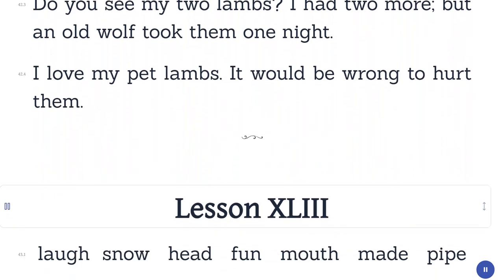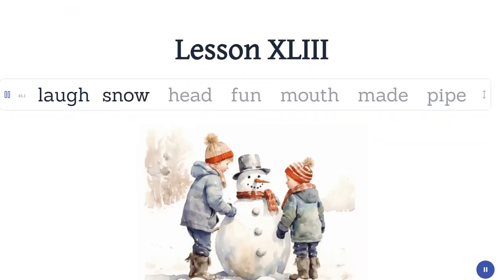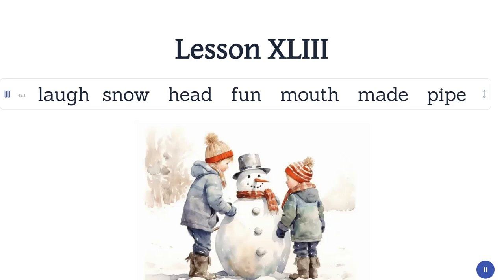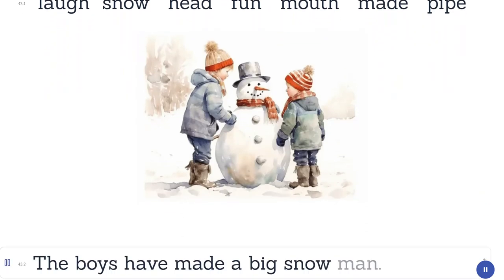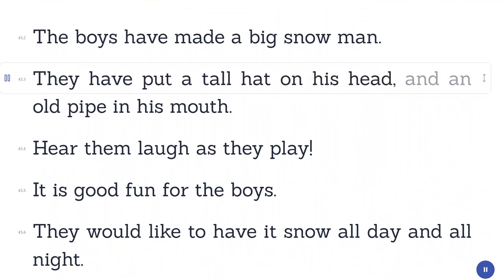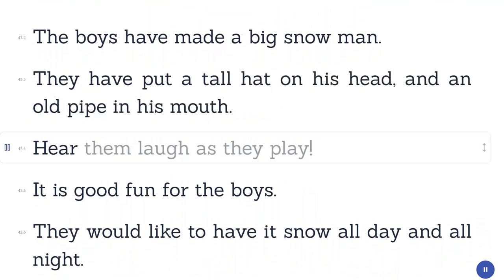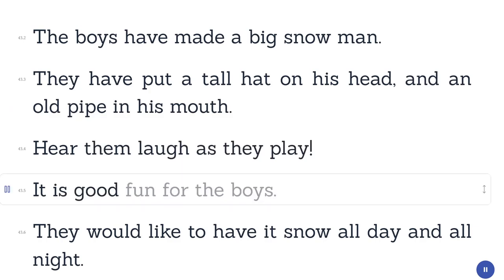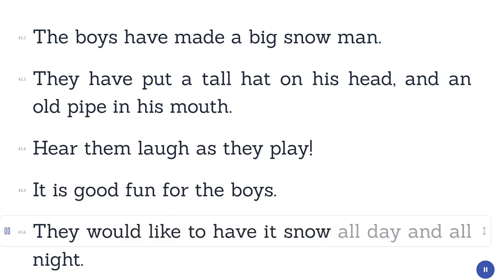Lesson 43. Laugh. Snow. Head. Fun. Mouth. Maid. Pipe. The boys have made a big snowman. They have put a tall hat on his head, and an old pipe in his mouth. Hear them laugh as they play. It is good fun for the boys. They would like to have it snow all day and all night.